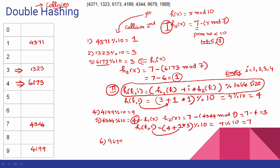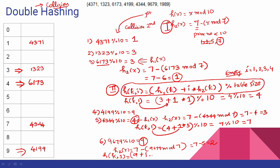Next: 9679 mod 10 is 9. Location 9 is already occupied — again use h2 of x: 7 minus 9679 mod 7 equals 2. So h(k, 1) = h1(k) + 1 times 2 mod 10: 9 plus 2 equals 11 mod 10 equals 1. So location 1 gets 9679.